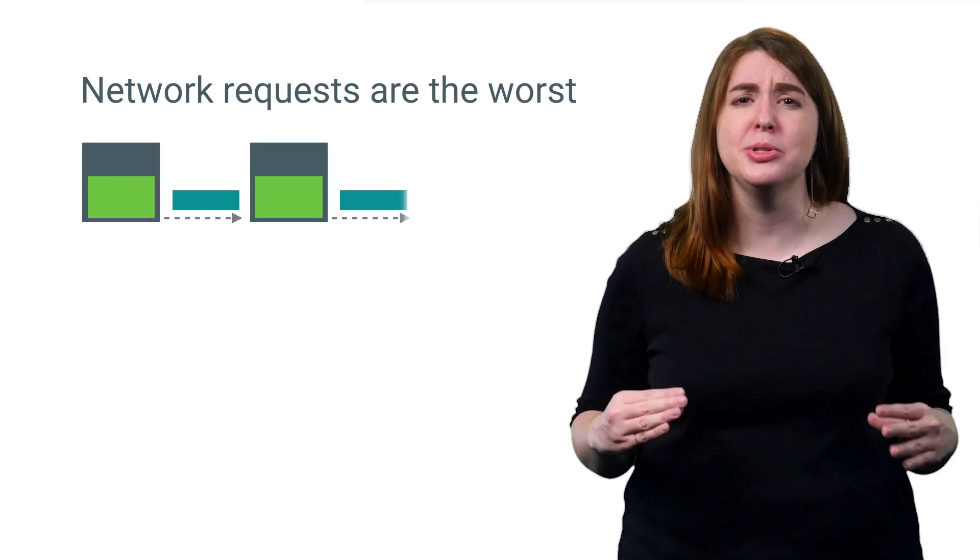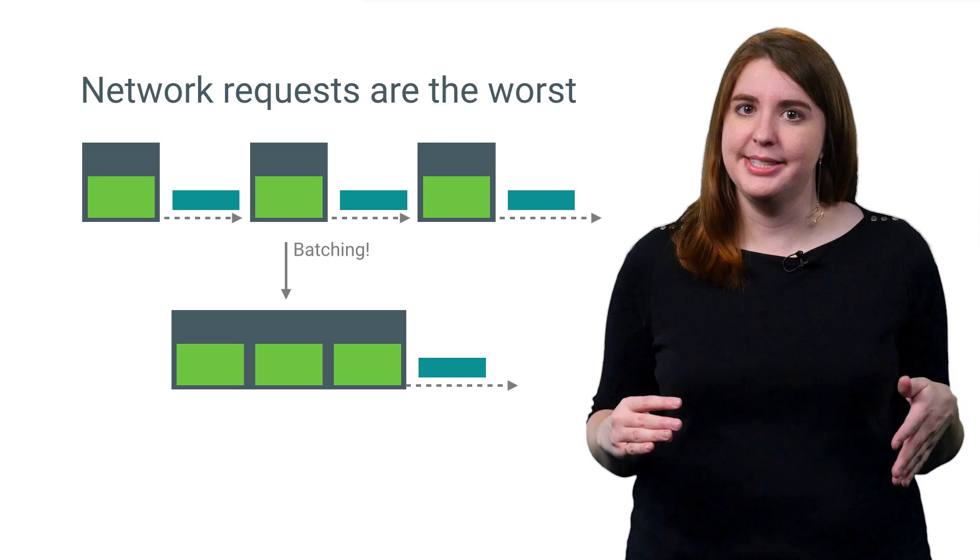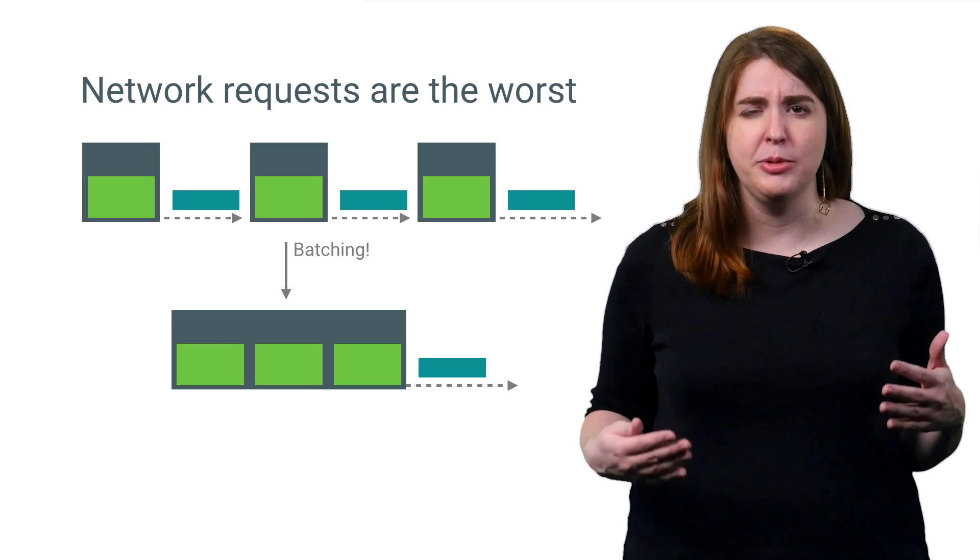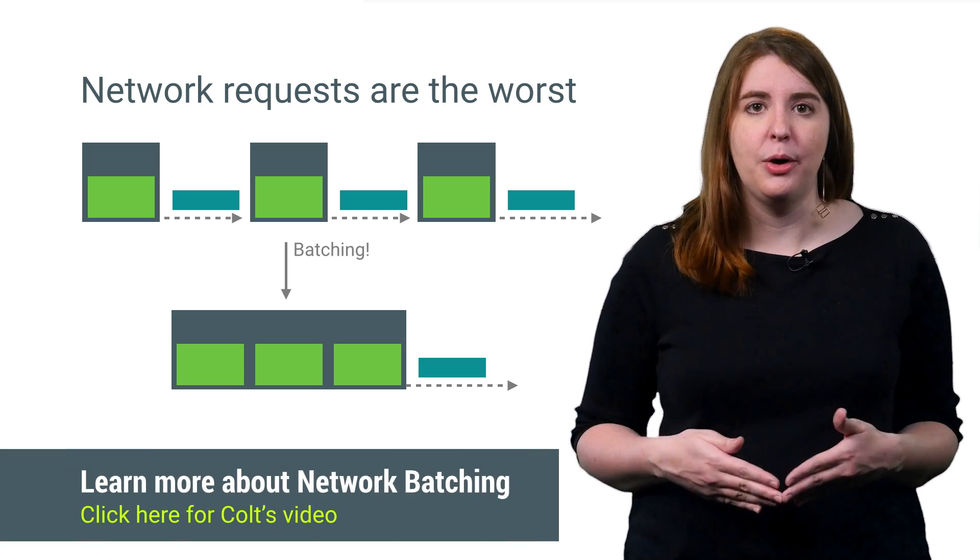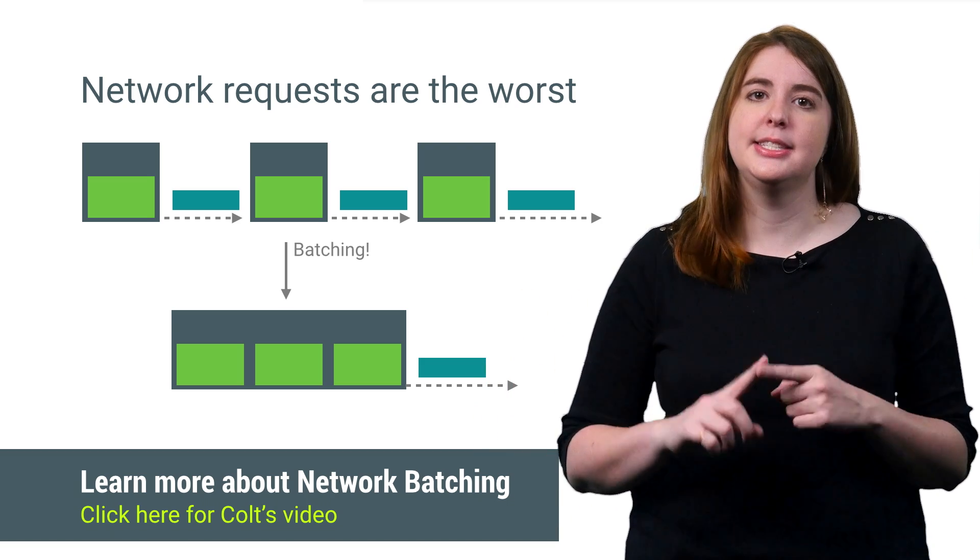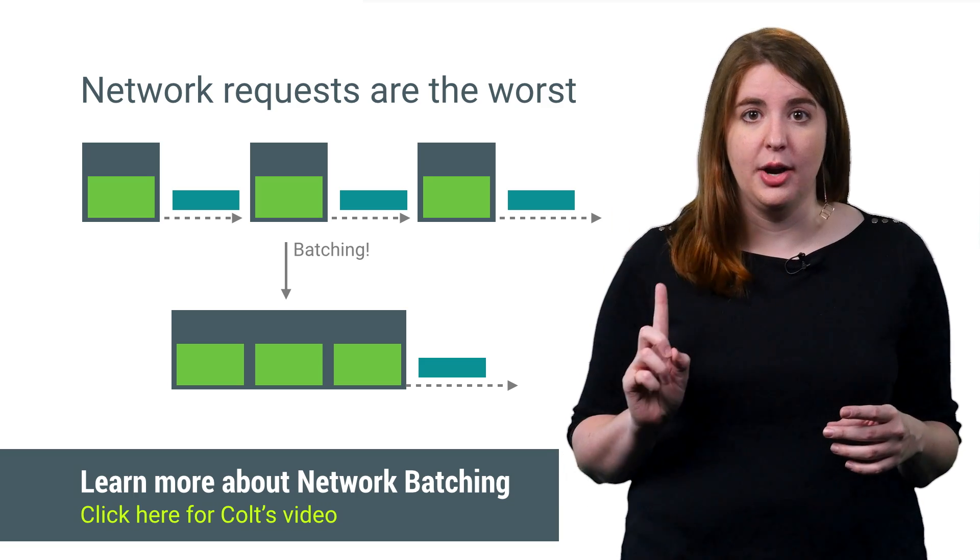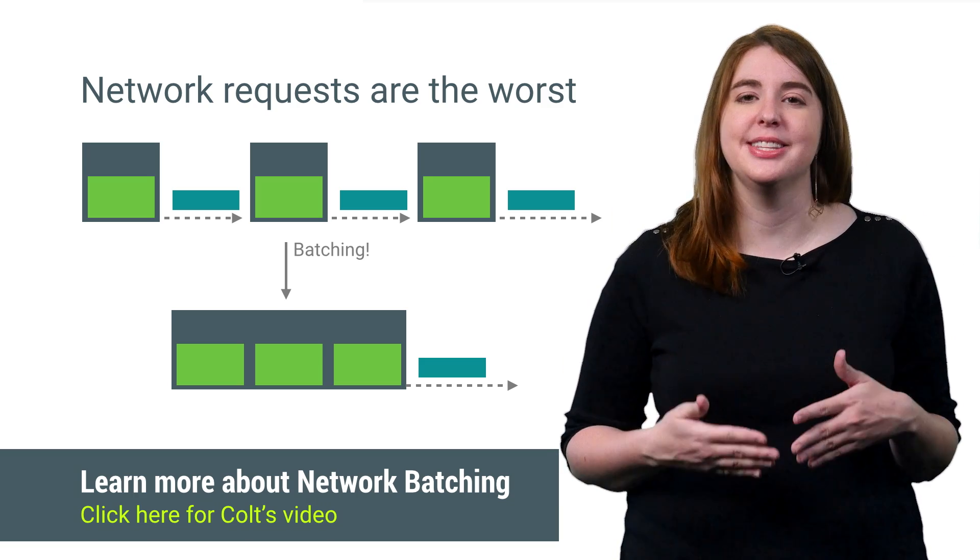For Android, one of the most important places you can leverage batching is with networking requests. Basically, there's an overhead cost each time you need to turn on your phone's cell radio. So if you're sending a packet out once every 30 seconds, you're paying for that cost every packet. Instead, you should group one to two minutes worth of requests together, turn the radio on once, and send all of those requests at the same time.